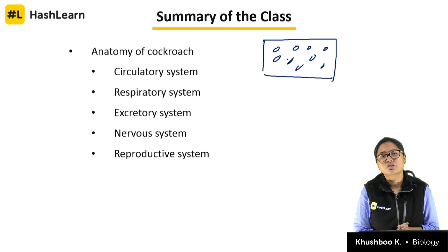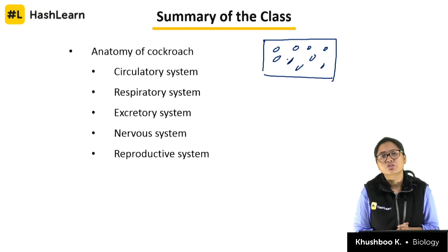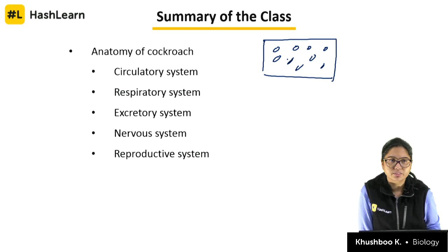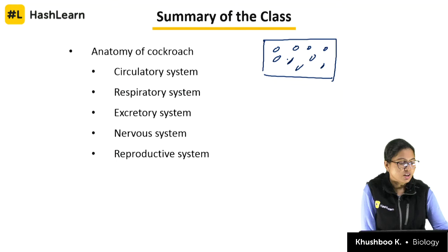Sense organs: antennae, maxillary palps, eyes with mosaic vision — the unit of the eye is the ommatidium. Reproductive system: components of male and female systems, which segment contains what, and the function of each component. Then nymph, what is molting, and how many times it molts. That's it for today's class.